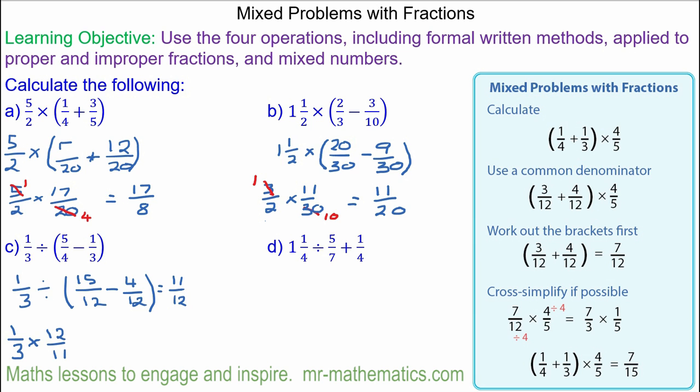Now we can use cross-simplifying. Then this becomes one dividing it by three. And that becomes four.